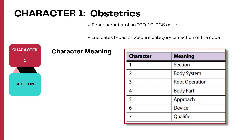Just like other sections, characters in each section have a specific meaning. This table shows what each character value means in the obstetrics section. The medical and surgical section and the obstetrics section have the same character meanings in the tables, unlike the rest of the other sections. Character one represents the section, character two is the body system, character three is the root operation, character four is the body part, character five is the approach, character six is the device left in place, and character seven identifies the qualifier.